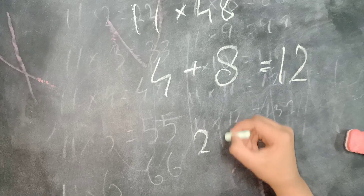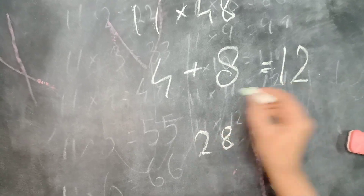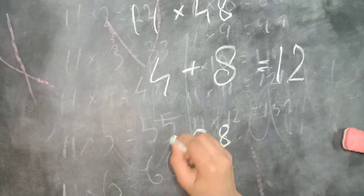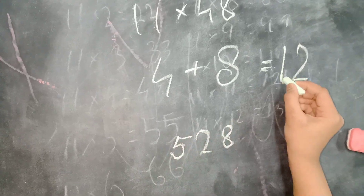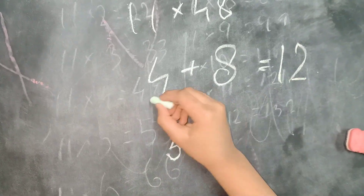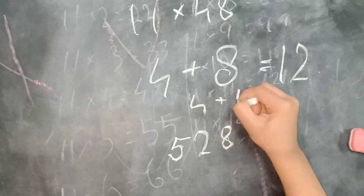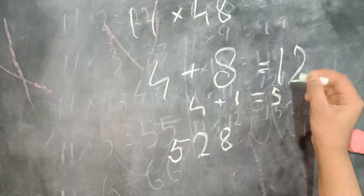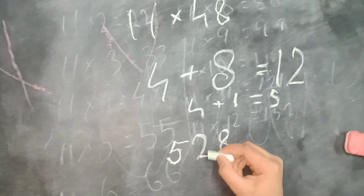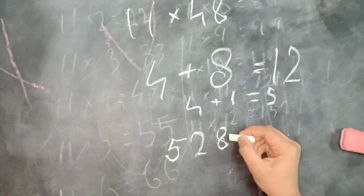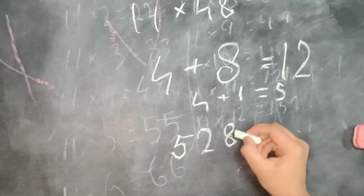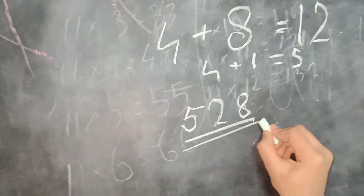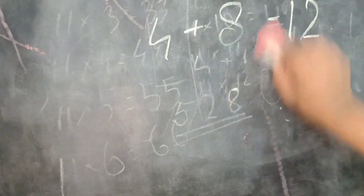Write 8 right here. Now let's add the 1 with the 4 — we get 5. So I took the 1 and added it with the 4 and got 5. Then I keep the 2 in the middle, take the 8 and put it in the 1's place. And that's the answer: 528.